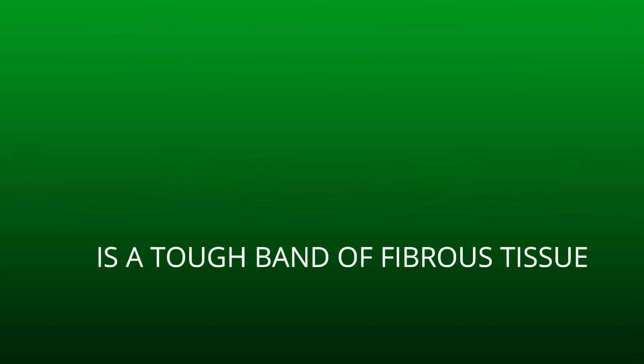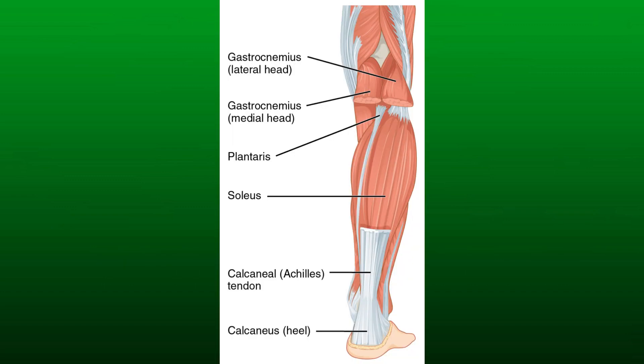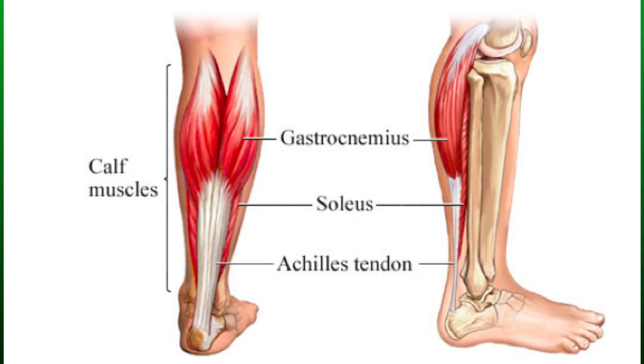The Achilles tendon is a tough band of fibrous tissue that connects the calf muscles to the heel bone, that is the calcaneus. The Achilles tendon is also called the calcaneal tendon. The gastrocnemius and soleus muscles, together called calf muscles, unite into one band of tissue which becomes the Achilles tendon at the lower end of the calf.